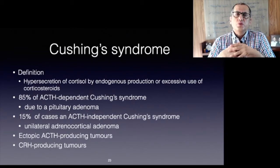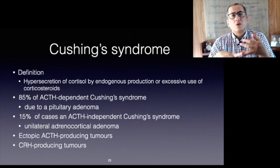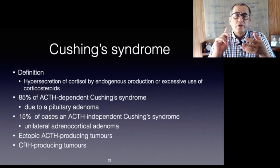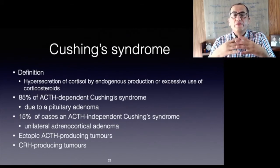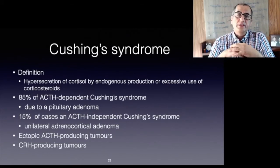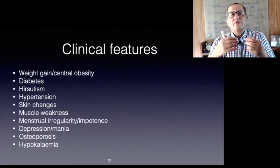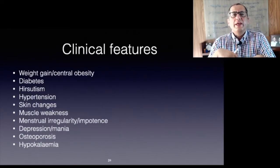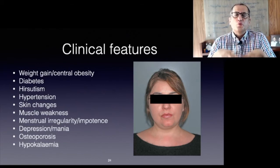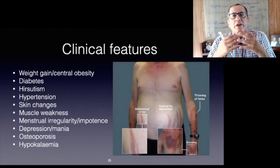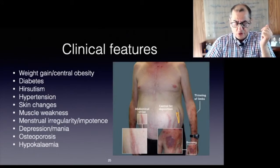Ectopic ACTH-producing tumors such as small cell lung cancer, carcinoids, and corticotropin-releasing hormone-producing tumors such as medullary thyroid carcinoma or neuroendocrine pancreatic tumors are more infrequent causes of ACTH-dependent Cushing's syndrome. Clinical features include weight gain, central obesity, diabetes, hypertension, skin thinning, muscle weakness, osteoporosis, hypokalemia, moon facies, a buffalo hump, and abdominal striae.